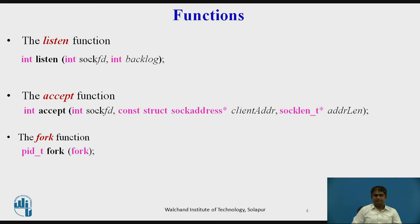The accept function is used by a server to inform TCP that it is ready to receive connections from clients. This function returns minus one if it fails. The prototype is shown here. The last two arguments are pointers to address and to length. The accept function is a blocking function that, when called, blocks itself until the connection is made by a client. The accept function then gets the client socket address and the address length and passes it to the server process to be used to access the client.